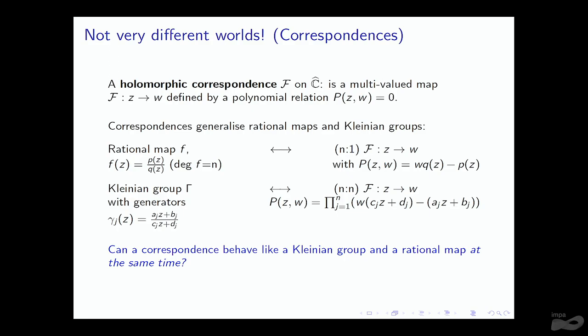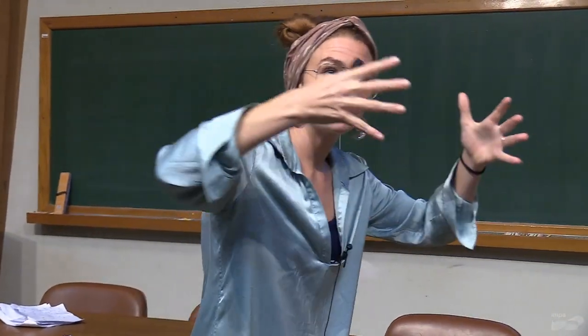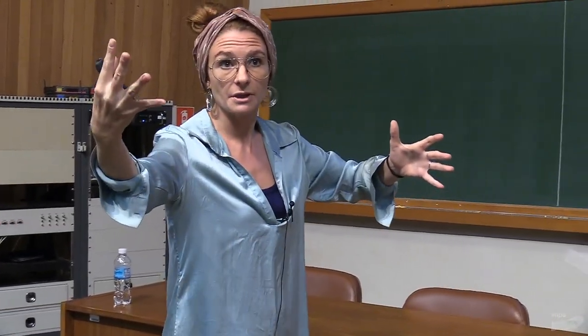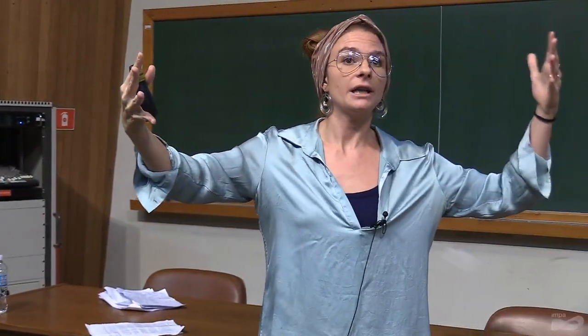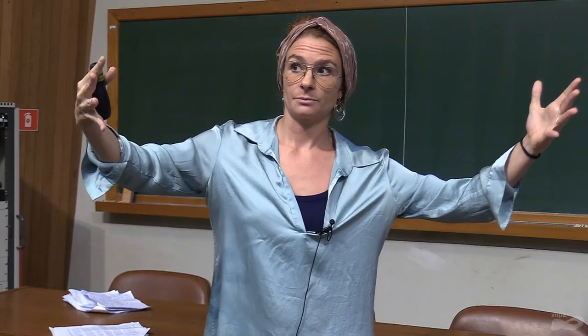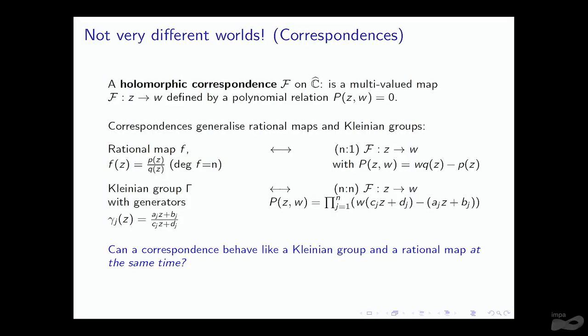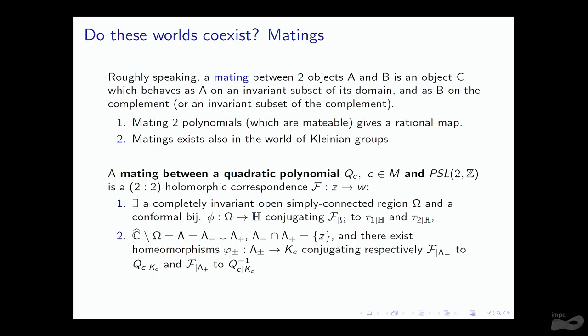A correspondence can be a rational map — in particular a polynomial — and it can be the modular group. But can it be both at the same time? Can we find a correspondence such that the dynamics gives a partition of the Riemann sphere into two invariant domains, where on one domain it behaves like the modular group, and on the other it behaves like a polynomial or quadratic map? In technical words, can we mate the modular group and quadratic maps in a correspondence?